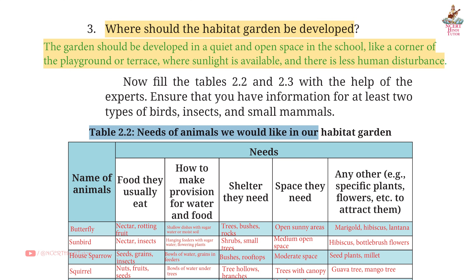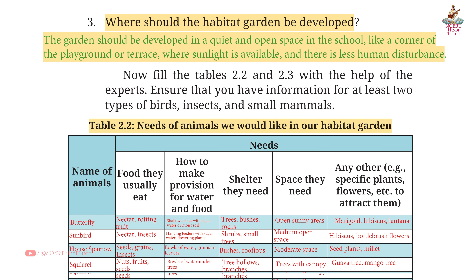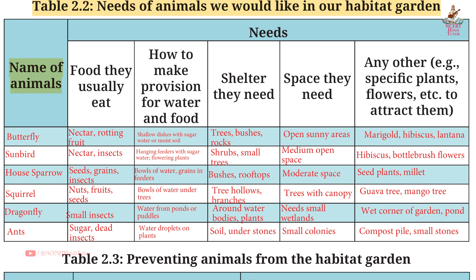Table 2.2, Page 32 — Needs of animals in our Habitat Garden. Butterfly: Food — Nectar, Rotting fruit. Water/food provision — Shallow dishes with sugar water or moist soil. Shelter — Trees, bushes, rocks. Space — Open sunny areas. Specific plants to attract them — Marigold, Hibiscus, Lantana.